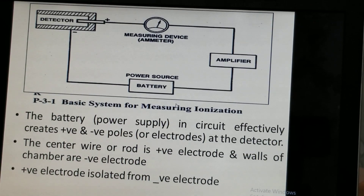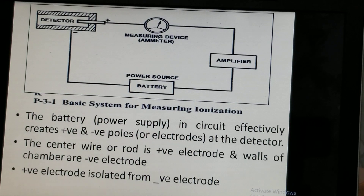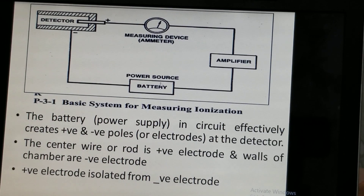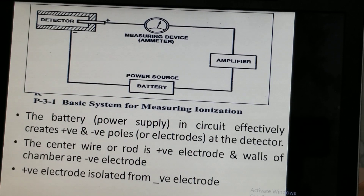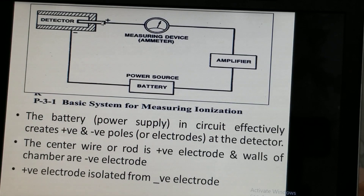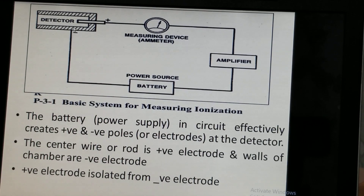This detector system measures ionization. It has a detector, a measuring device called an ammeter, a signal amplifier, and a battery or power source. The battery creates positive and negative poles at the electrodes in the detector. The negative side of the battery is connected to the negative pole, and the positive side is connected to the positive electrode — called the anode — which is the central wire. The chamber walls are the negative electrode, and the positive electrode is isolated from it.